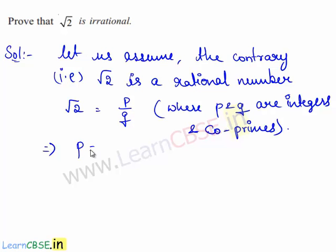This implies p is equal to root 2 times q. Now squaring this on both sides, we have p square is equal to 2q square. Let this be equation 1.